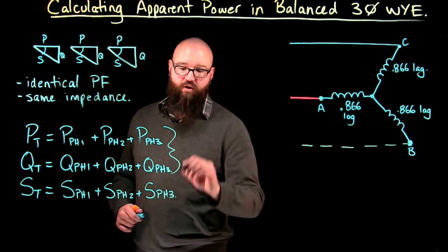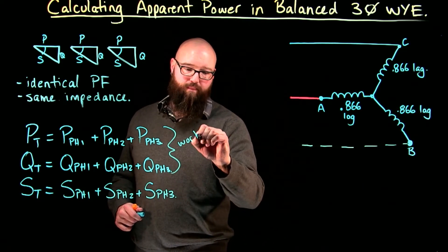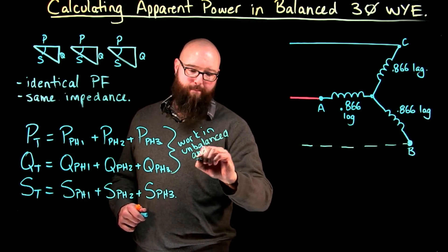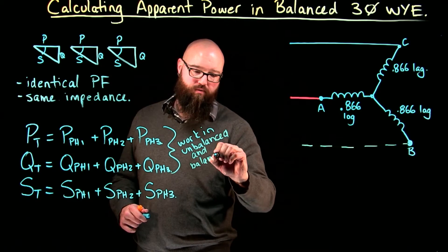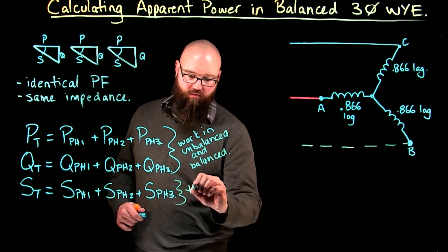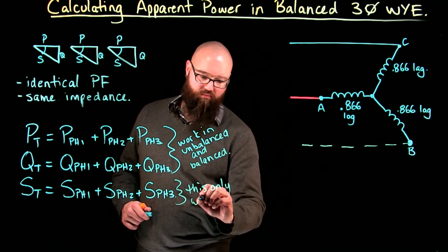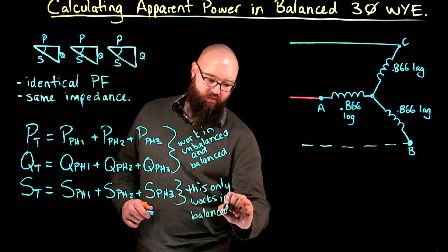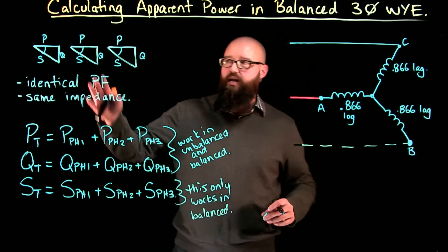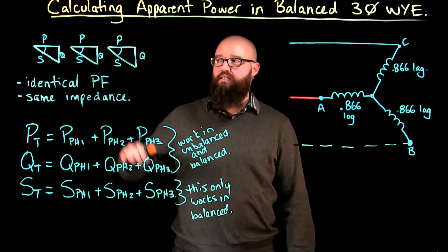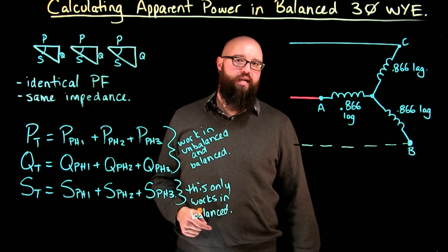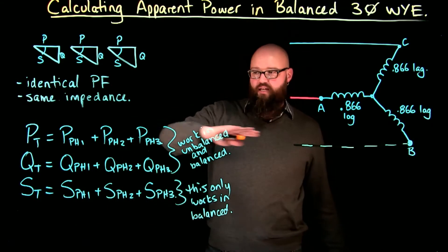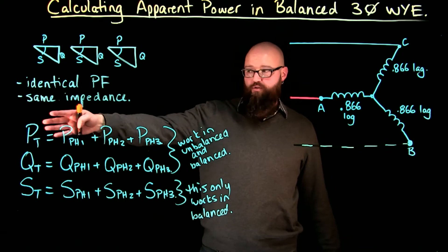So again, these will work in unbalanced and balanced. This only works in balanced. Because, again, if I was to go through with an unbalanced load, I would end up with slightly different triangles per phase, which means that my VAs would be at different angles. I can't add things together that are at different angles. So this works in a balanced and unbalanced, and if you are faced with an unbalanced question, I would just go through and do it this way.